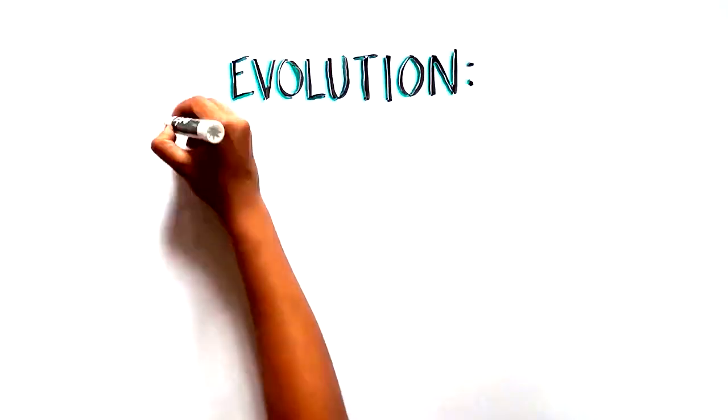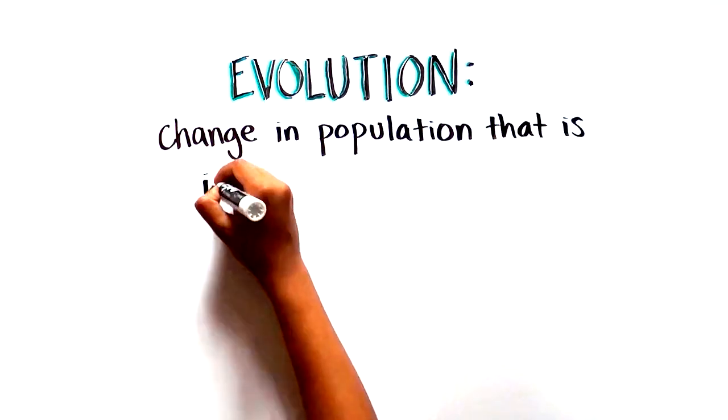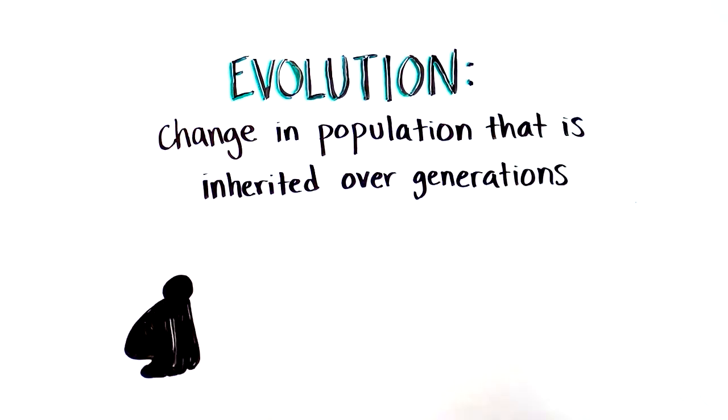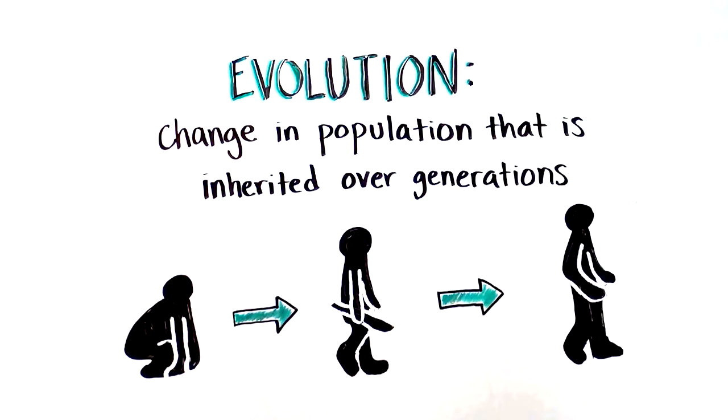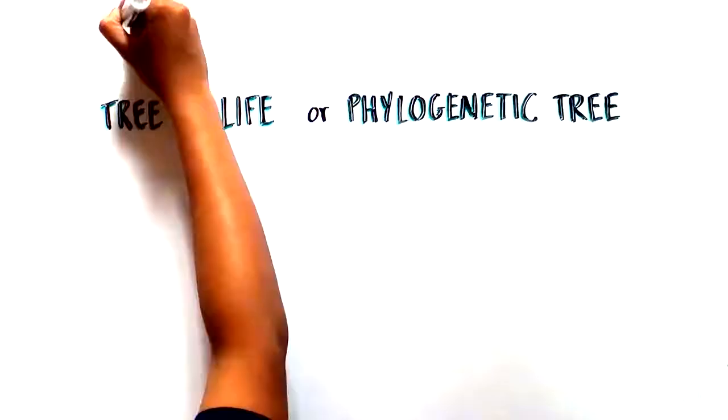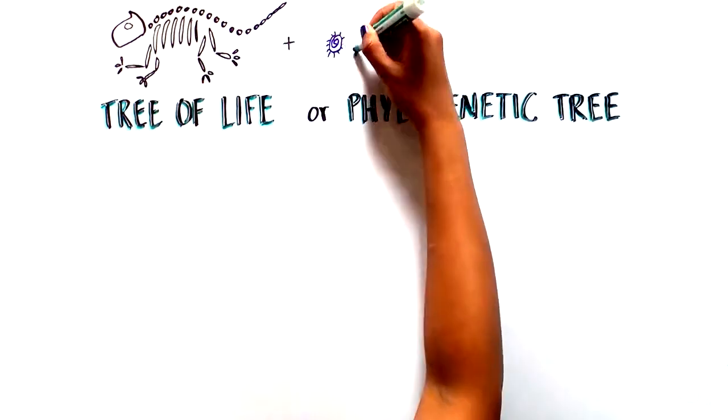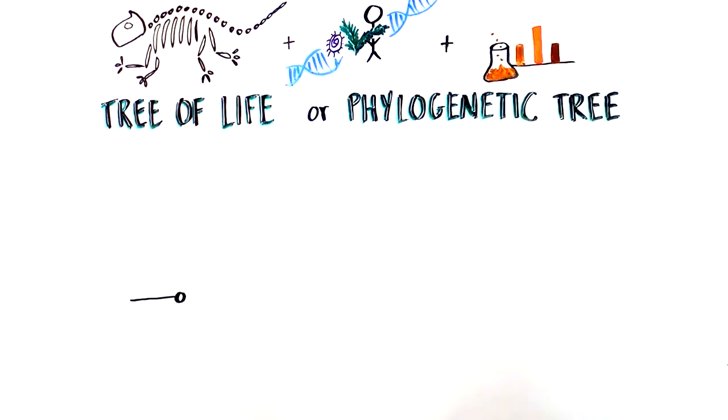Evolution refers to the change in a population that is inherited over generations. To understand that, we can start with a depiction of the tree of life, also called the phylogenetic tree, which is a way to visualize how different species of organisms are evolutionarily related.